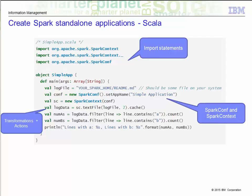Unlike the Spark shell, you have to initialize the Spark context in a program. First, you must create a SparkConf to set up your application's name. Then you create the SparkContext by passing in the SparkConf object. Next, you create the RDD by loading in the text file and then caching the RDD. Since we will be applying a couple of transformations on it, caching it will help speed up the process, especially if the LogDataRDD is large.